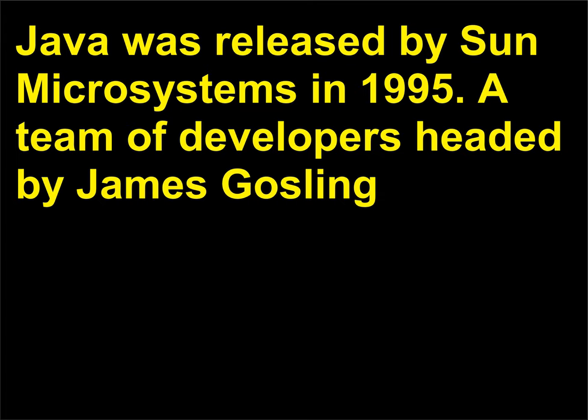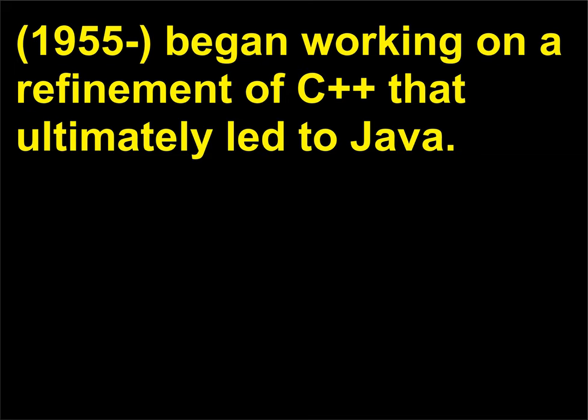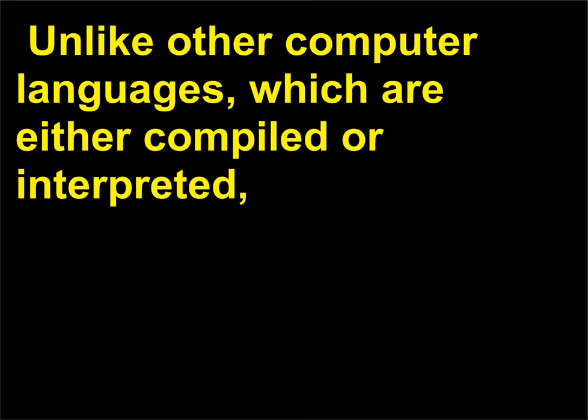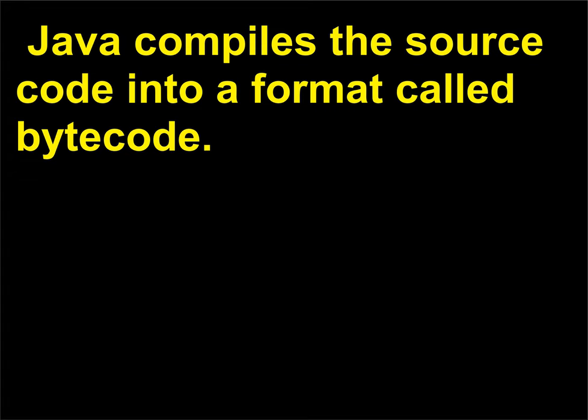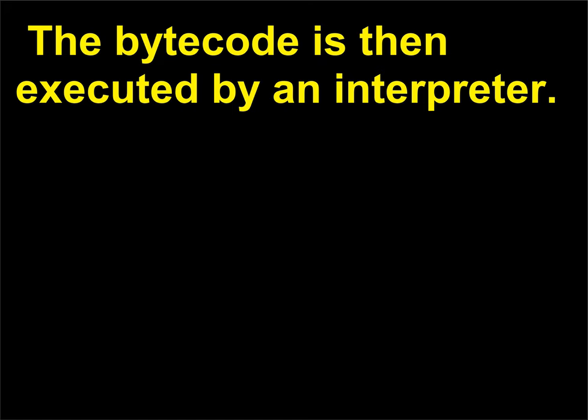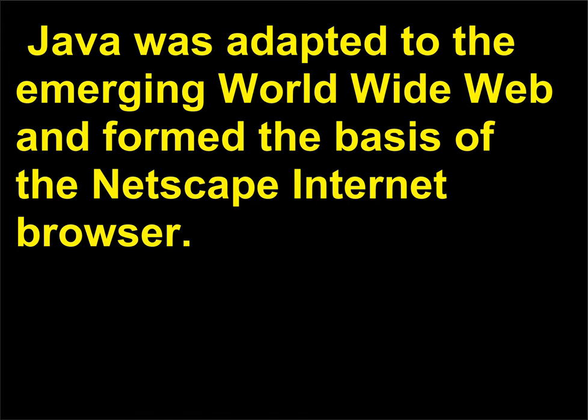Java was released by Sun Microsystems in 1995. A team of developers headed by James Gosling, 1955, began working on a refinement of C++ that ultimately led to Java. Unlike other computer languages, which are either compiled or interpreted, Java compiles the source code into a format called bytecode. The bytecode is then executed by an interpreter. Java was adapted to the emerging World Wide Web and formed the basis of the Netscape Internet Browser.